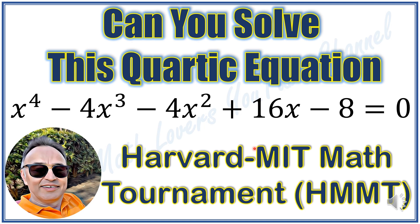Hello everyone, welcome to the Prime Math Lovers YouTube channel. Today we are going to solve this quartic equation from Harvard-MIT Math Tournament HMNT: x to the power of 4 minus 4x cubed minus 4x squared plus 16x minus 8 is equal to 0.